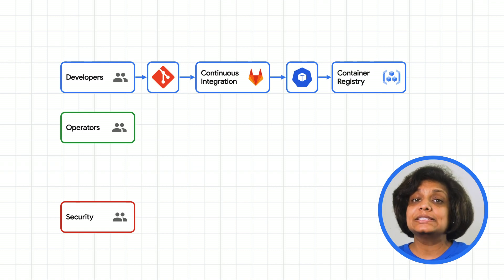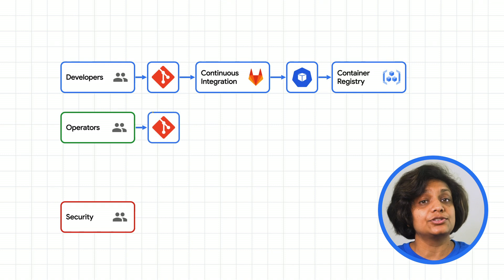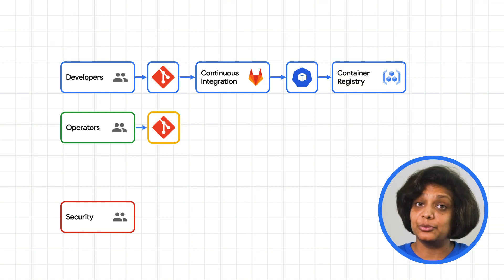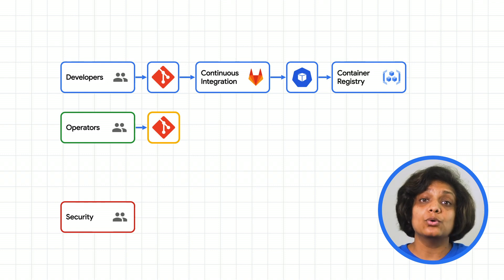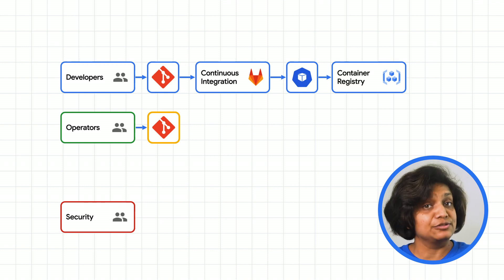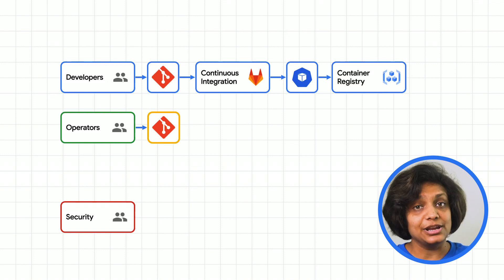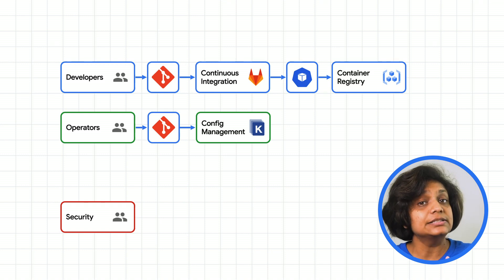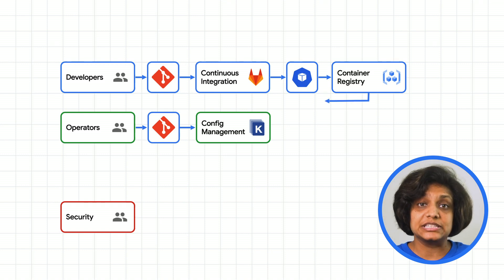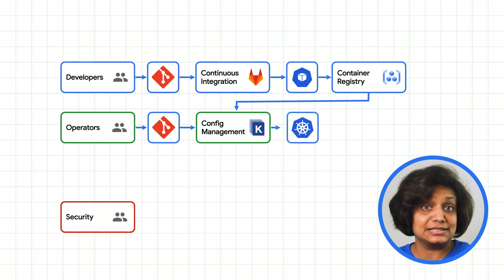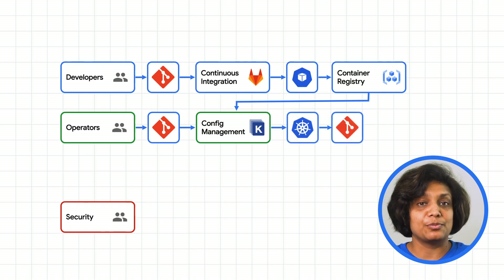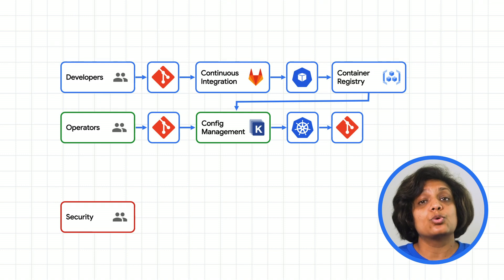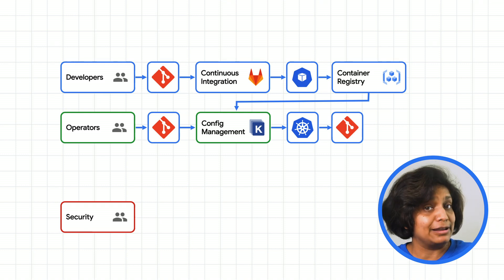The reference to the recently stored image will be stored in another Git repository controlled by your application operations team — we'll call this the deployment repo. This secondary repository holds Kubernetes manifests, which have instructions on how applications should be configured. In order to manage that configuration, we use a tool called Kustomize. Kustomize packages together the desired state container image from our container registry and the instructions from the Kubernetes manifests, and stores it in the deployment repository.